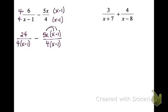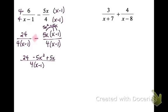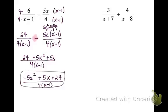Now I have common denominators, so I need to distribute to combine like terms. On the top, I have 24. Distributing the 5x gives 5x squared minus 5x, but I also have this negative to distribute, making it negative 5x squared plus 5x. Putting the numerator in standard form: negative 5x squared plus 5x plus 24. That's my final answer — a little ugly, but my final answer.